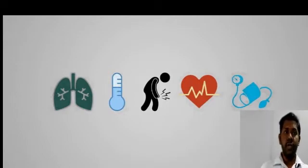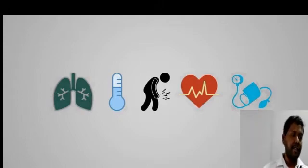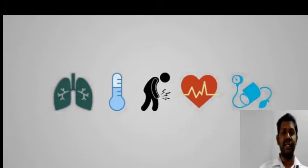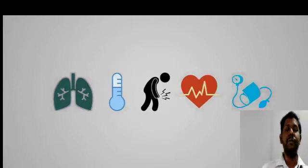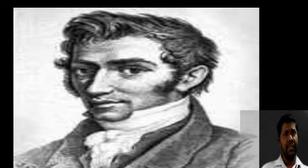Coming to blood pressure — if you are not provided with a sphygmomanometer, you can write 'not recorded.' Similarly for temperature, if you are not provided with a thermometer, write 'not recorded.' Do not write a normal value like 36 or 98°F if you haven't measured it with an instrument.